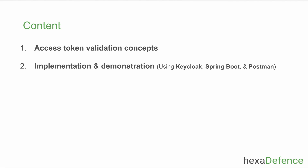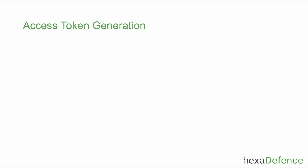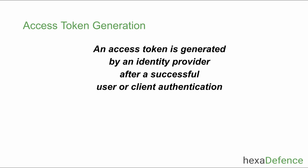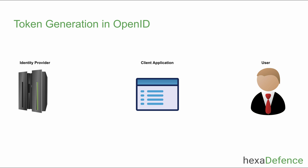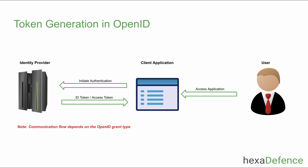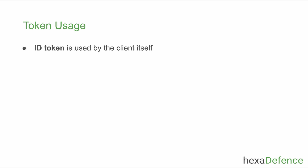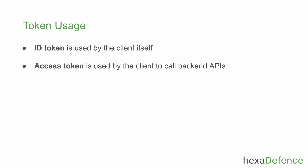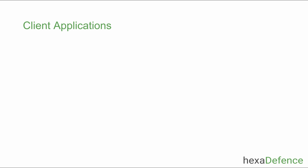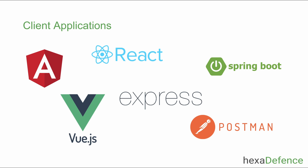Let's begin from the basics — how an access token is generated. An access token is normally generated by an identity provider after a successful user or client authentication. If you're using OpenID Connect protocol, upon successful authentication the client application may receive an access token and an ID token from the identity provider. The ID token is used by the client itself; the access token is used by the client application to call backend APIs for read and write operations.